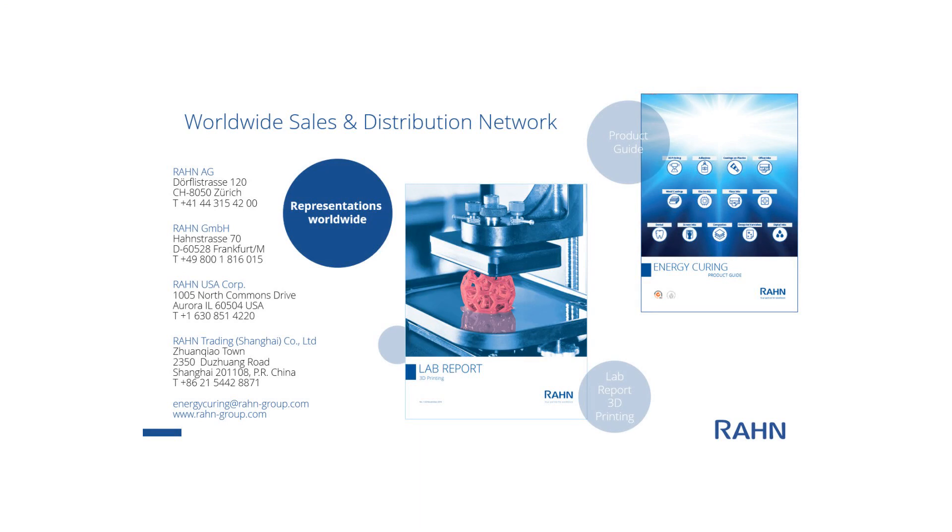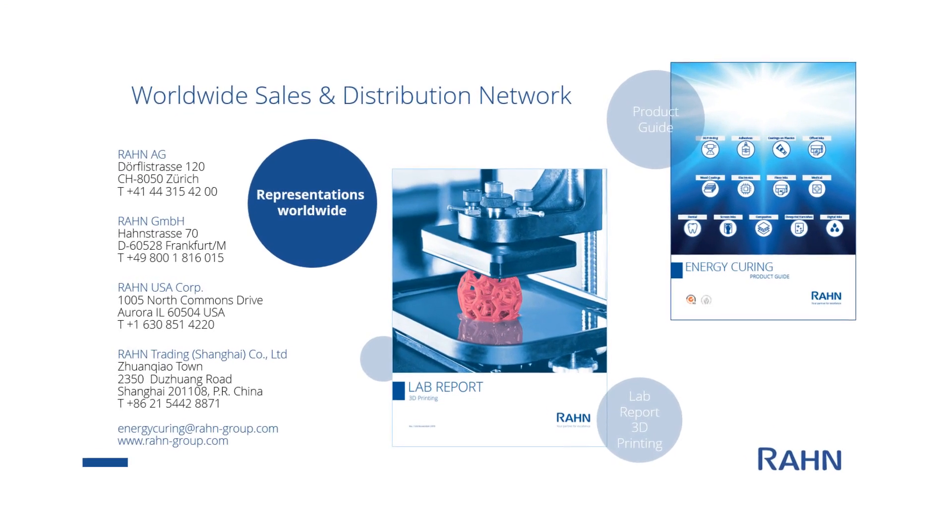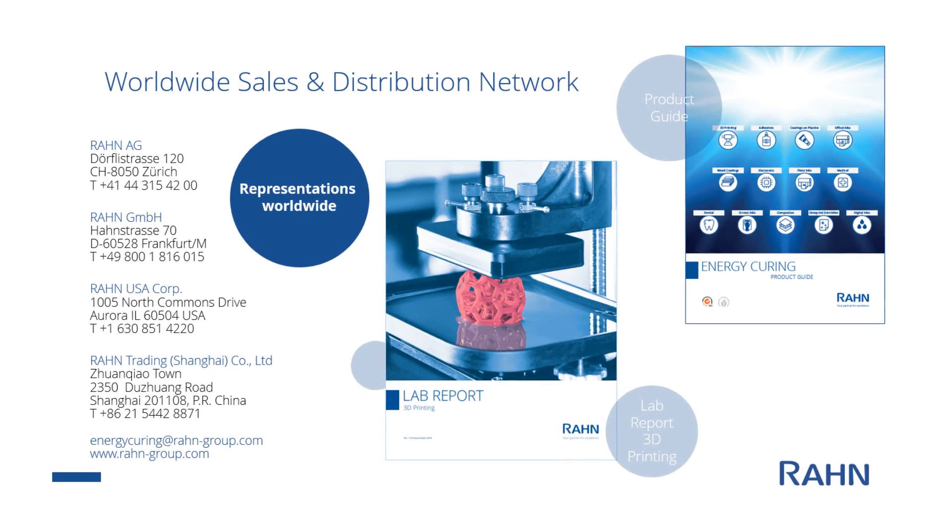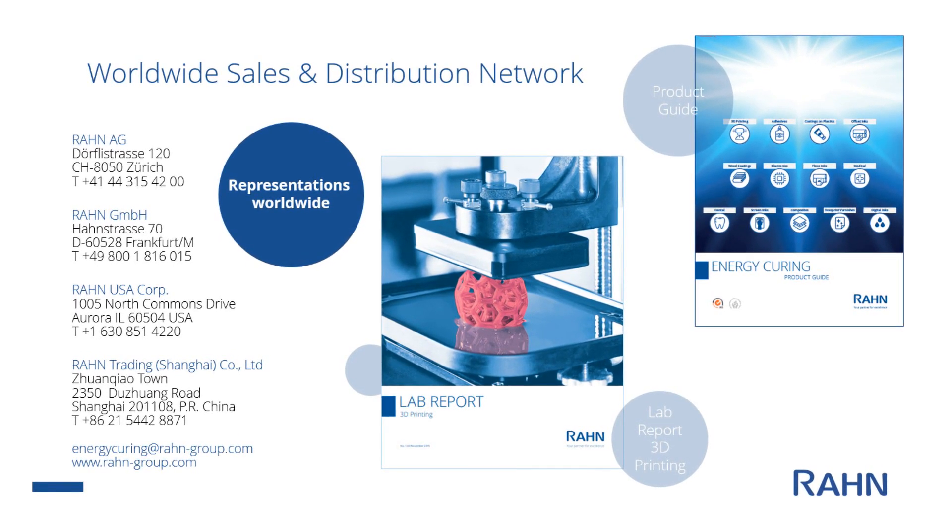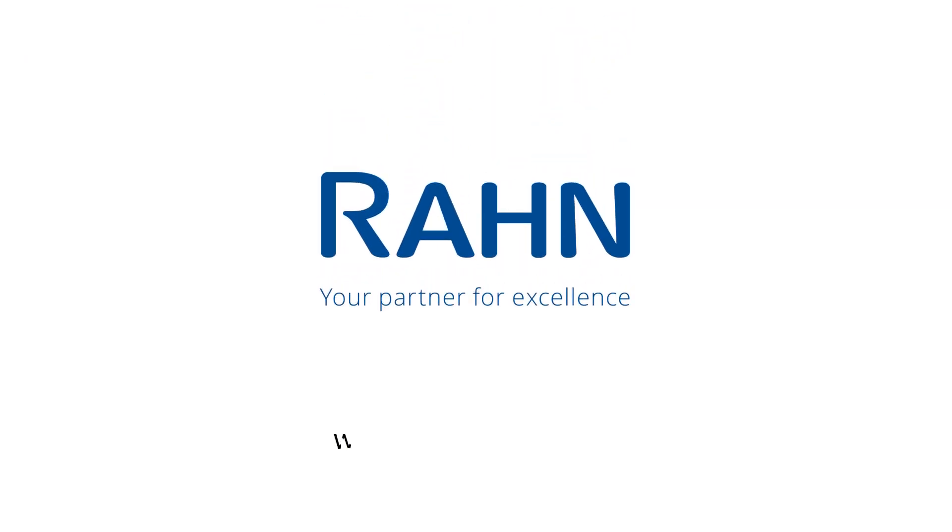These values can now be used to choose which of our commercial products are most suitable to achieve specific properties of a printed part. Those products can be optimized for your application through formulation and testing, and can be found in the RAHN product guide and 3D printing lab report. Alternatively, contact your RAHN salesperson or see our website for more information.